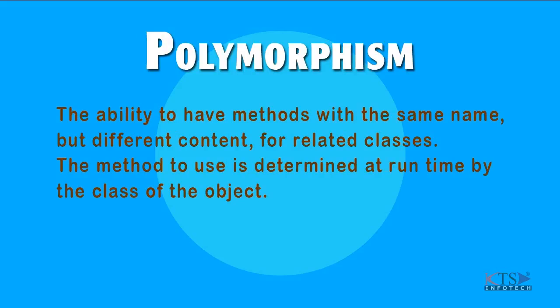Polymorphism example. Polymorphism is the ability to have methods with the same name but different content for related classes. The method to use is determined at runtime by the class of the object.